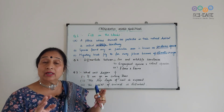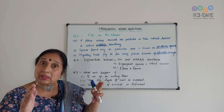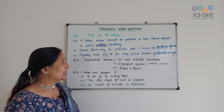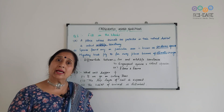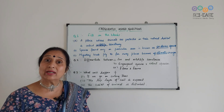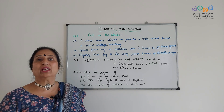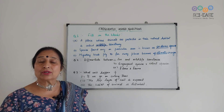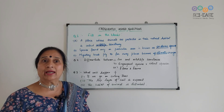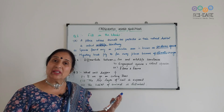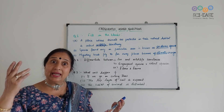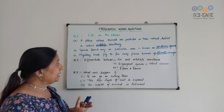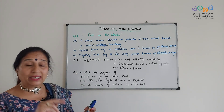Extinct species are those that have completely died out — like the dinosaur. They are cut off; we don't know if they are still there. These are very important terms.